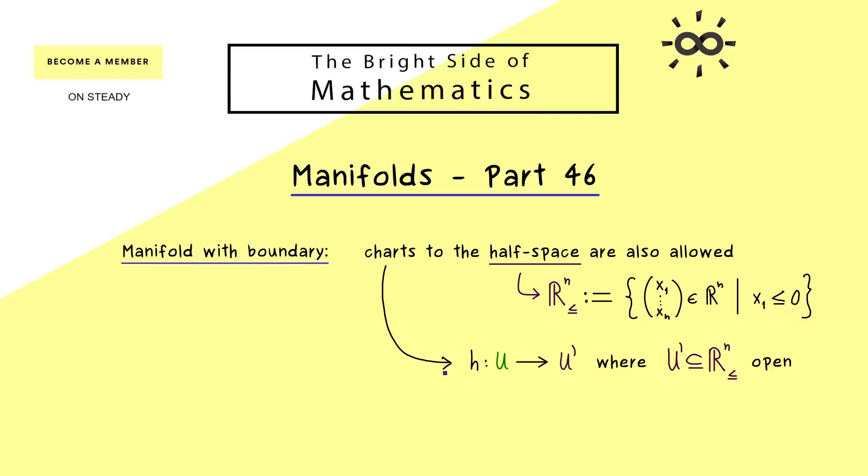So you see, a chart is also again a homeomorphism, but now U' is an open set in the subspace topology. And in fact, this is all we need for the extension, and then a lot of definitions and properties from the ordinary manifolds immediately generalize to manifolds with boundaries.